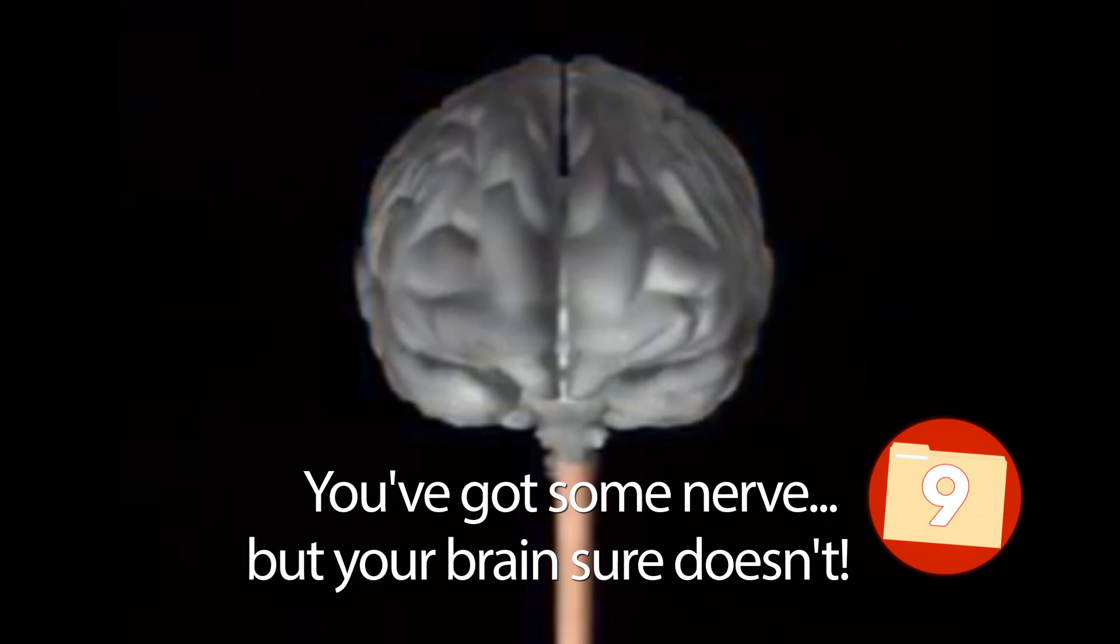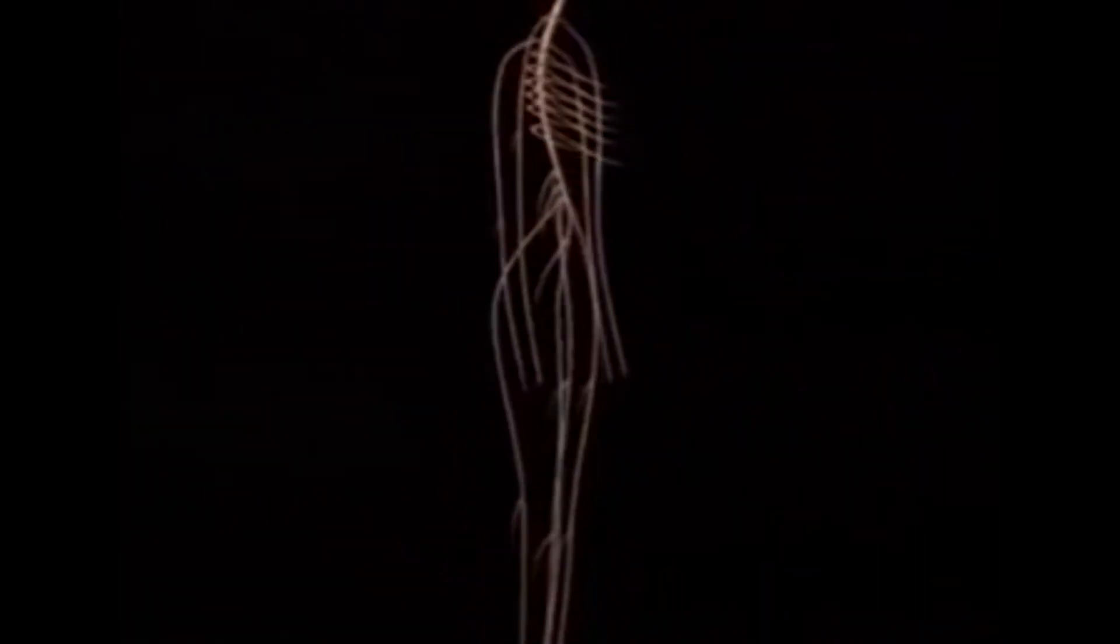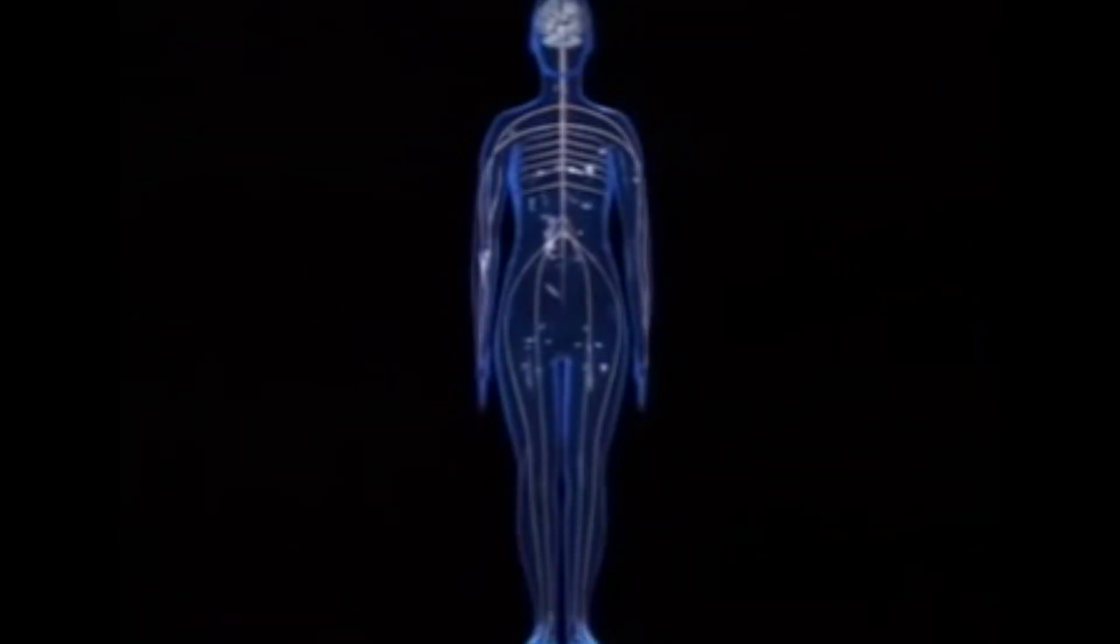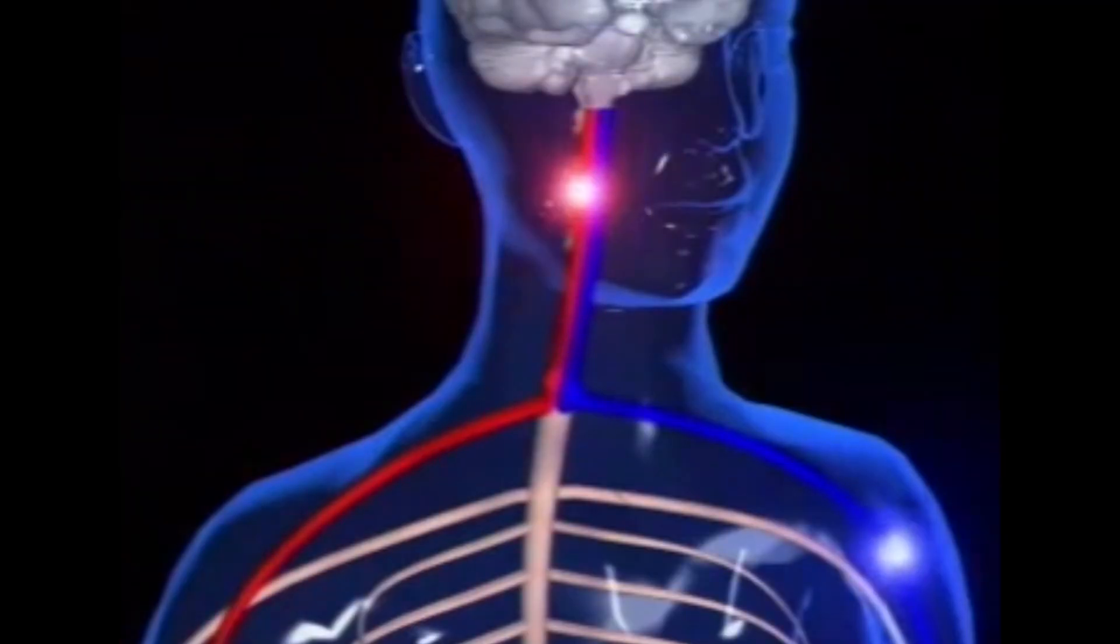Number 9: You've Got Some Nerve? But Your Brain Sure Doesn't! Amazingly enough, your brain is the only organ you possess that doesn't have nerves of its own, despite the fact that it's your command center for the central nervous system in which 86 main nerves branch from. Or simply, your brain cannot feel a bit of pain, as pain receptors are nothing more than nerves themselves.